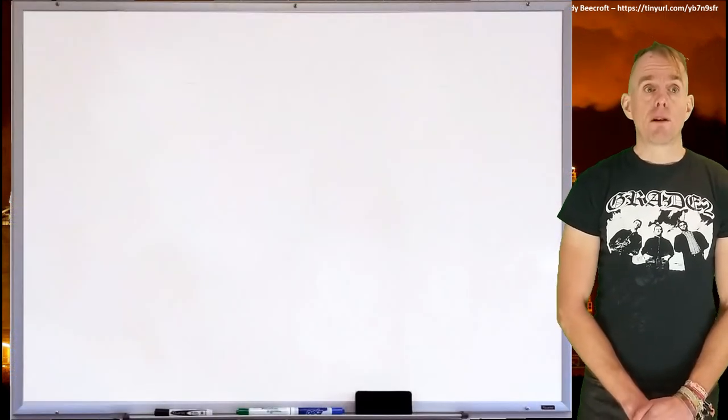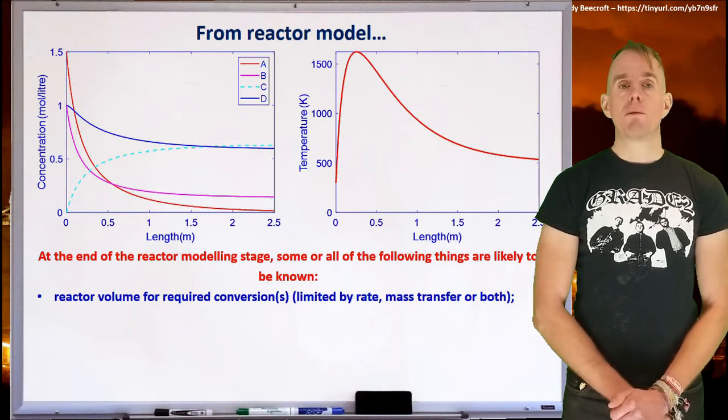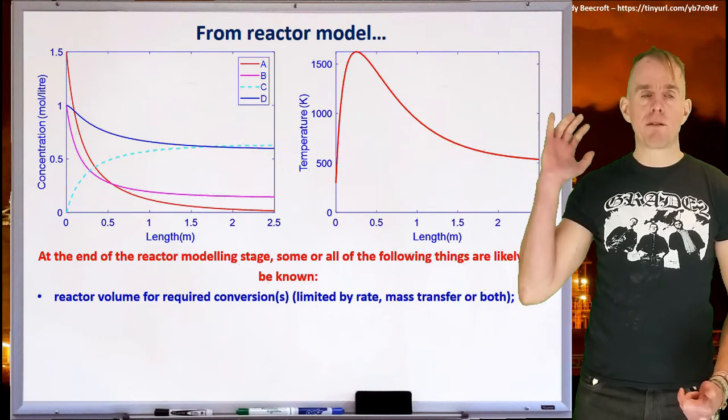A key learning point will be that the volume of the pressure vessel will be larger, sometimes significantly larger, than that required for just the reaction to occur in. We'll go on to briefly examine agitation systems, and also mention some other pieces of mechanical equipment that may need to go inside a reactor pressure vessel. So if you recall where we got to in the last lecture, we had a reactor model.